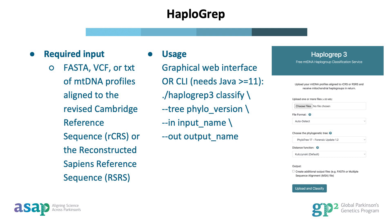Haplogrep provides a user-friendly web interface, linked and screenshotted here. Alignment files in FASTA, VCF, or TXT formats are uploaded onto the platform, and users have the option to specify a particular phylogenetic tree and distance metric if desired. Haplogrep then conducts a quality control step before calculating summary statistics for all samples. An annotation step is performed after haplogroup classification, and the web interface includes a summary dashboard with information on each sample and data visualizations.